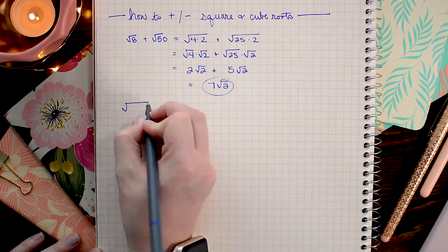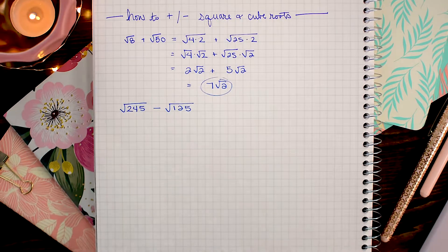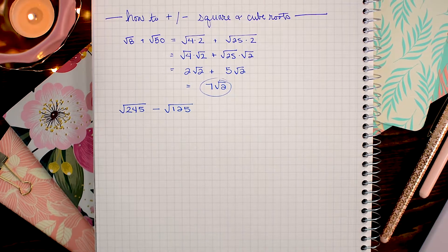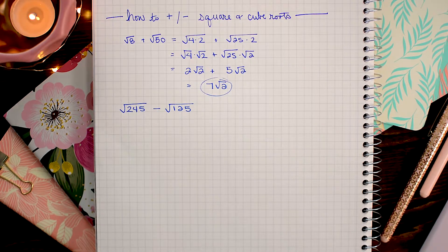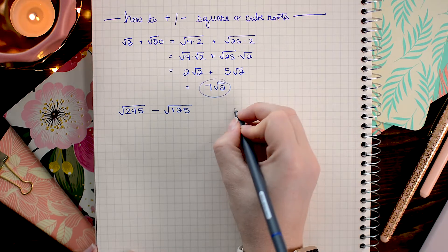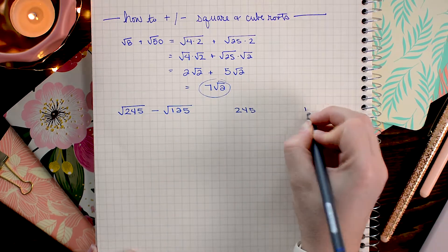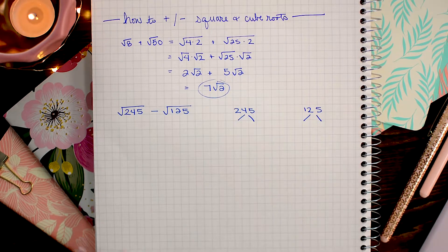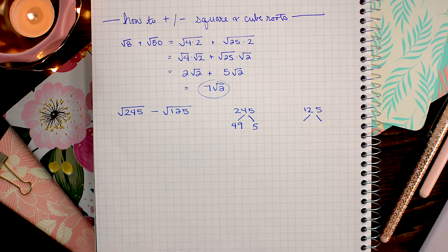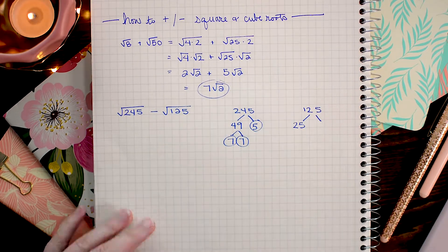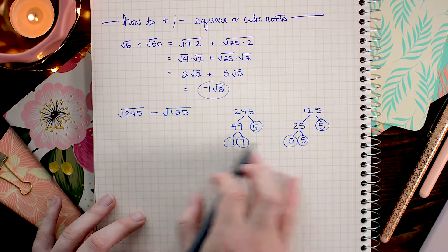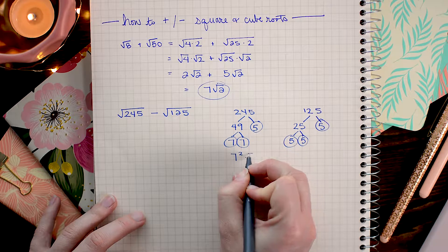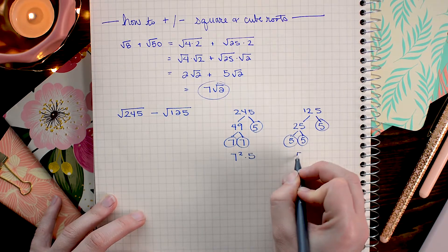So with this problem the factors are not as obvious. And whenever I have factors that aren't obvious I like to do factor trees to simplify them. So I'm going to make 2 factor trees over here on the side in my scratch work. So let's go ahead and write the prime factorizations for both of these. I have 7 squared times 5 here, and 5 cubed here.